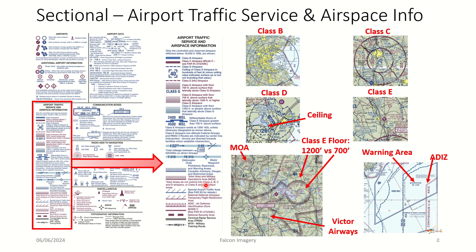Moving to airport traffic service and airspace information — this is a really key one to spend time on. You've got to be able to identify the type of airspace you're potentially flying over. Concentric blue circles around Boston represent class Bravo airspace. Concentric magenta solid lines around Manchester airport represent class Charlie. The dashed thick blue lines represent class Delta airspace. And the thin magenta dashed line represents class Echo to the surface, here around Concord airport.